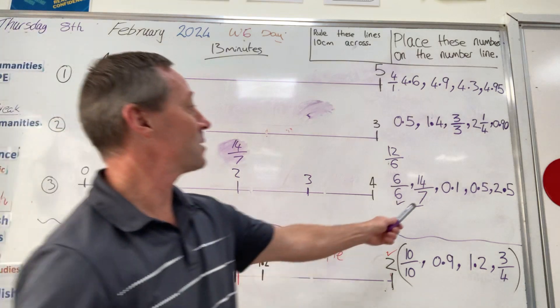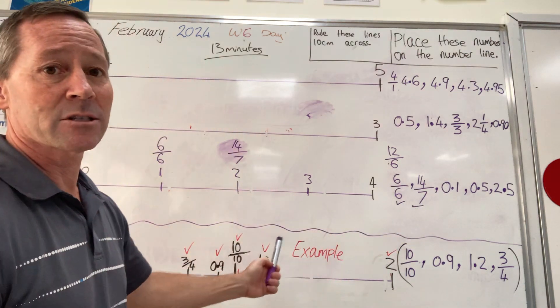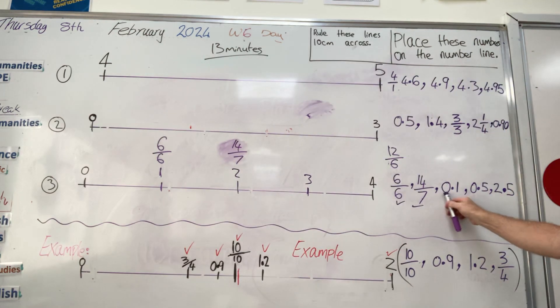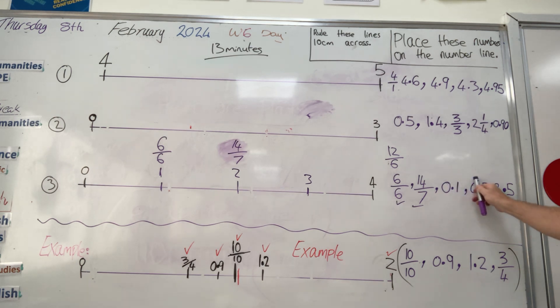So we've done this one. 0.1. Okay. So there's not enough to make, there's no whole numbers here. We're talking ones, no, there's no ones. And we're looking at the tenths column. The same with the next one. No ones, no whole numbers. And we've got five, five tenths. The next one's got two, two wholes and five tenths.